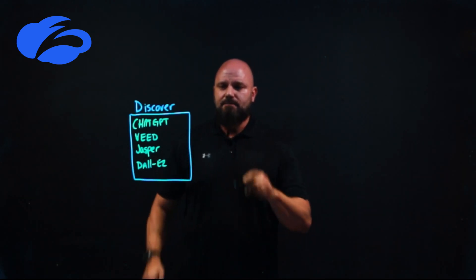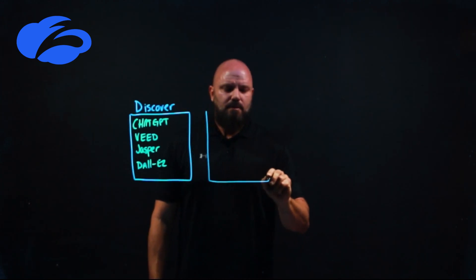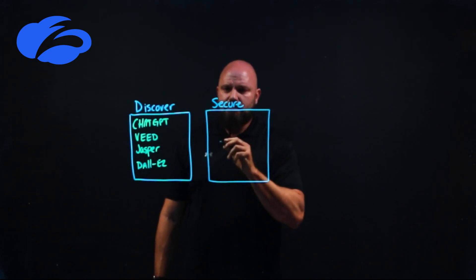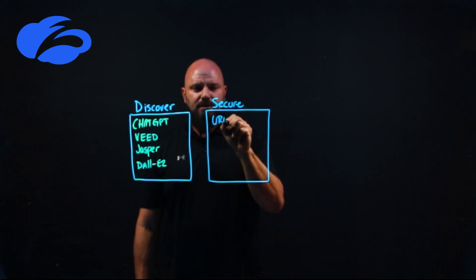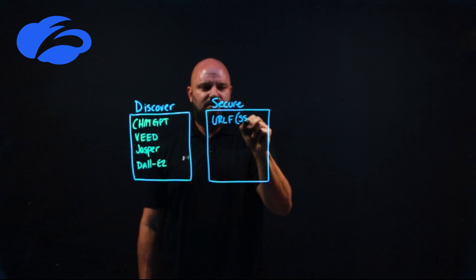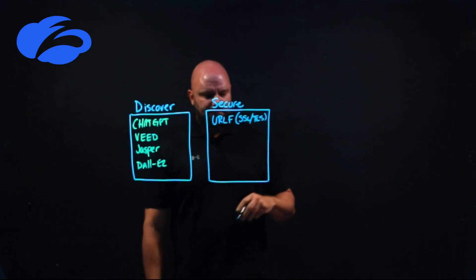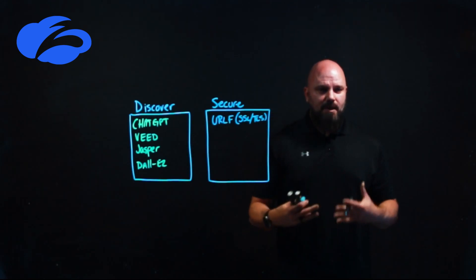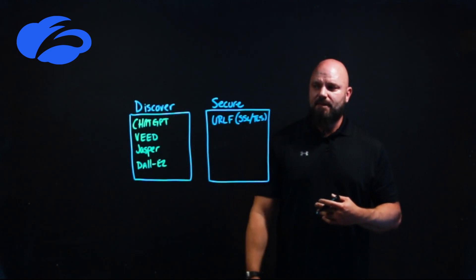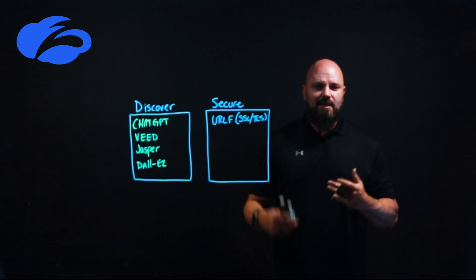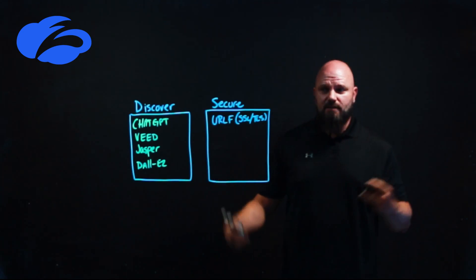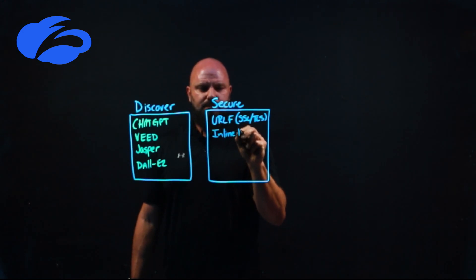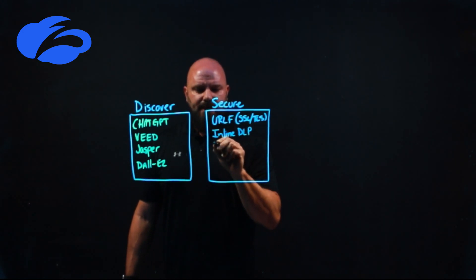It's one thing to discover, but now we have to figure out how to secure that — so we go into our Secure pillar. From a secure perspective, this is the URL filtering you're all familiar with, inspecting SSL and TLS traffic. But the biggest concern for organizations is: I don't want to take sensitive information and throw it into one of these generative AI applications, allowing it to learn my data and then share it outside my organization. The ability to do inline DLP is also unparalleled, and then we have cloud app control.